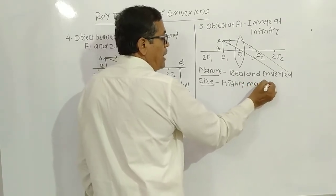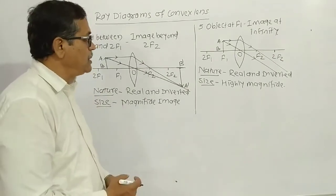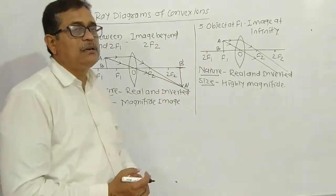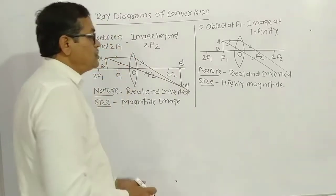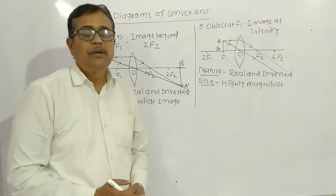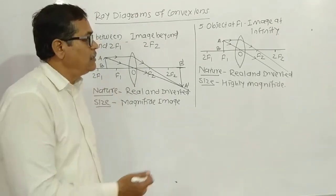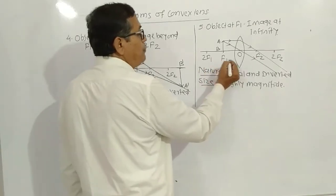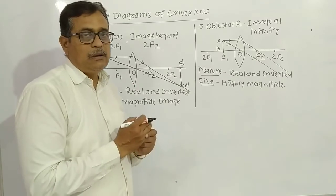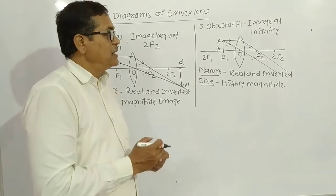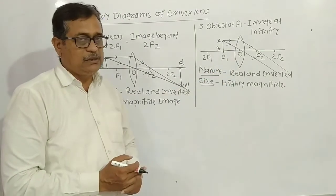That is diagram number five — a highly magnified image. Then the last diagram: in all five diagrams so far, the nature of image is the same — real and inverted. But in the last diagram, when the object is between F1 and the optical center, the nature of image changes.